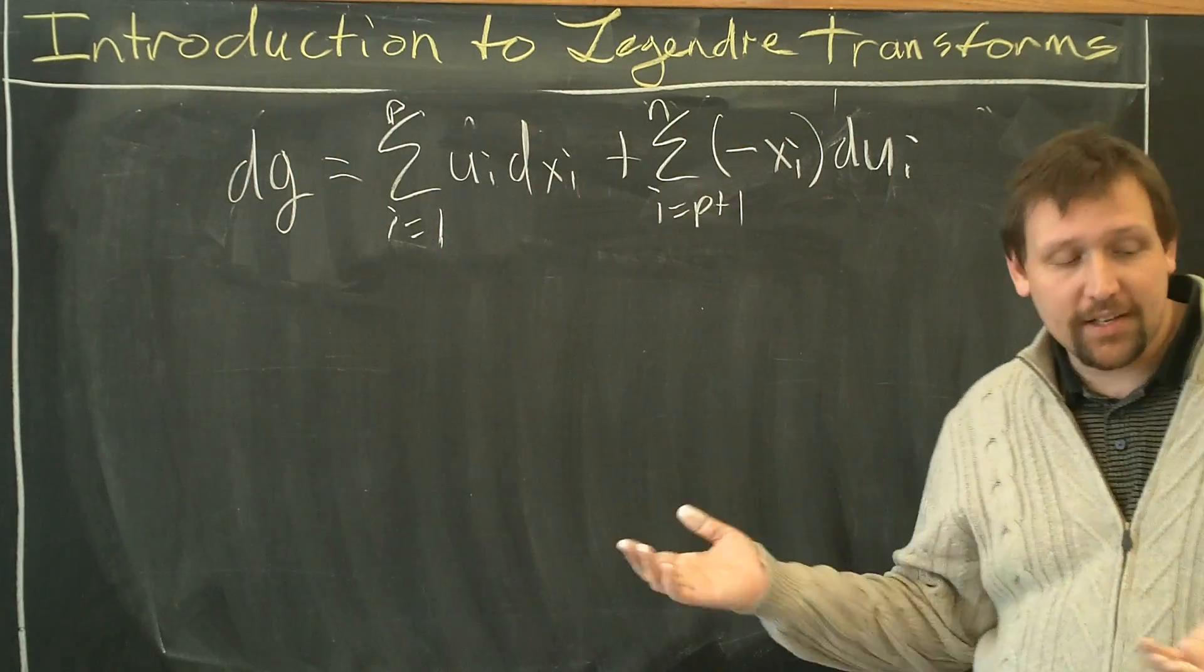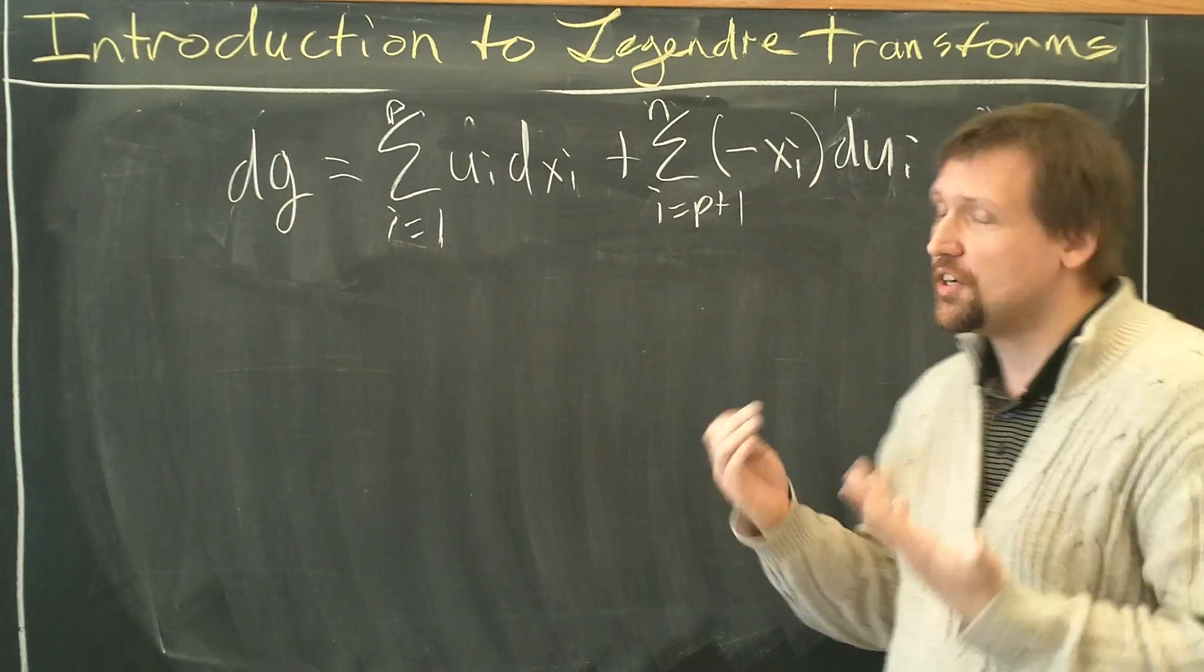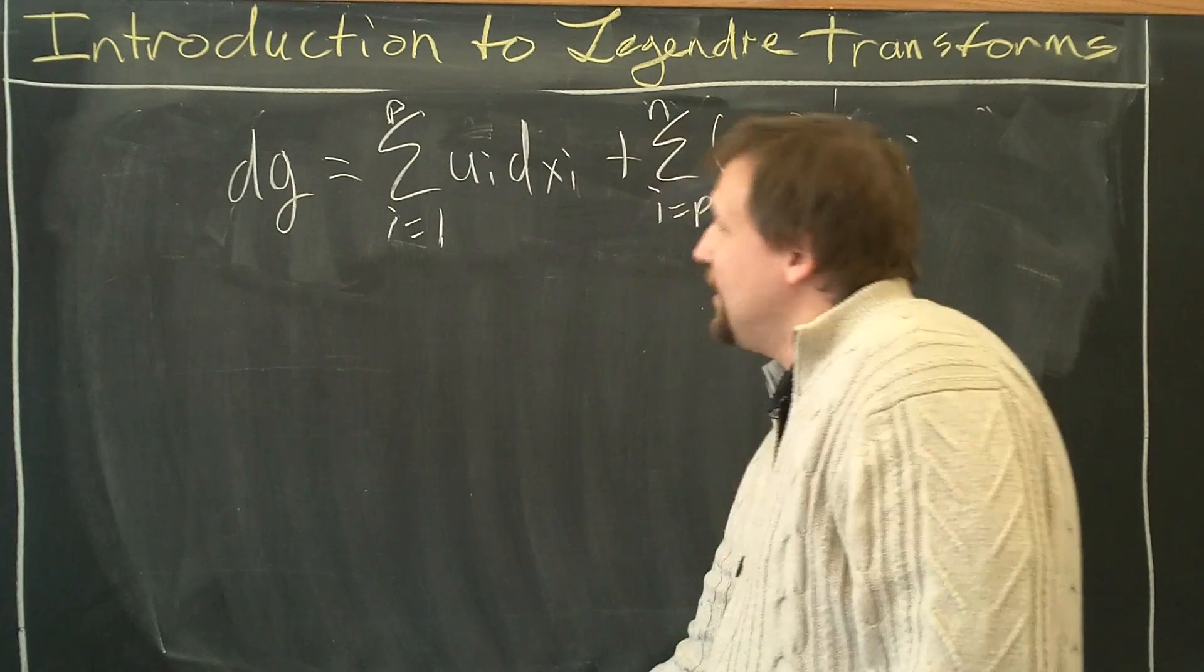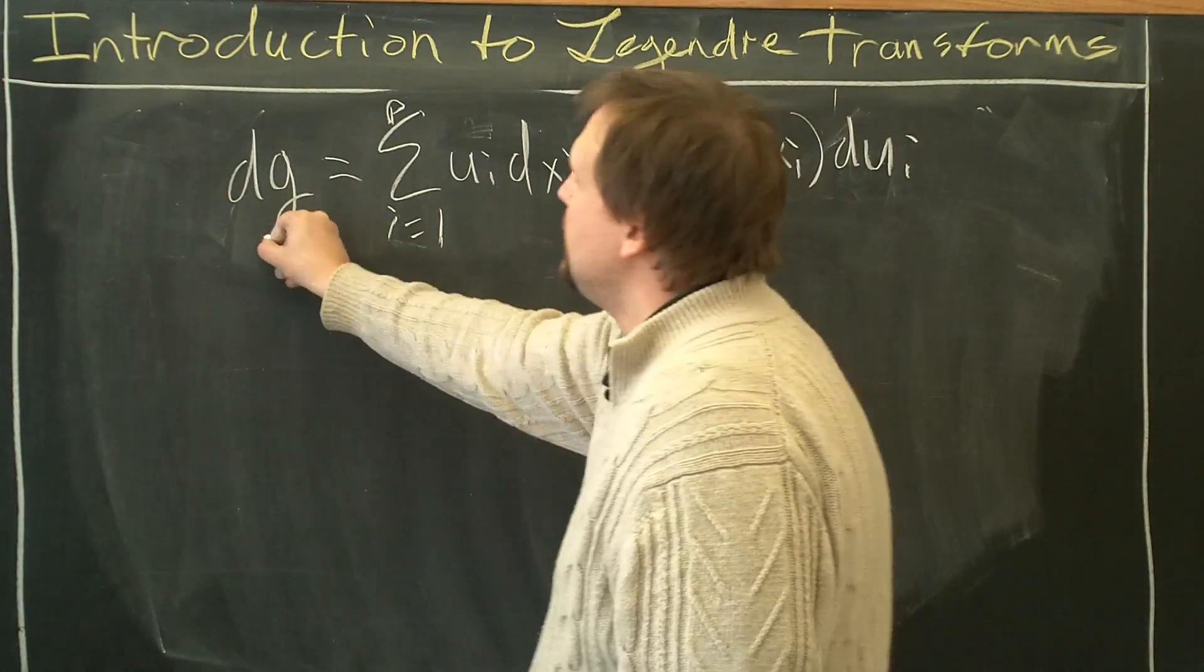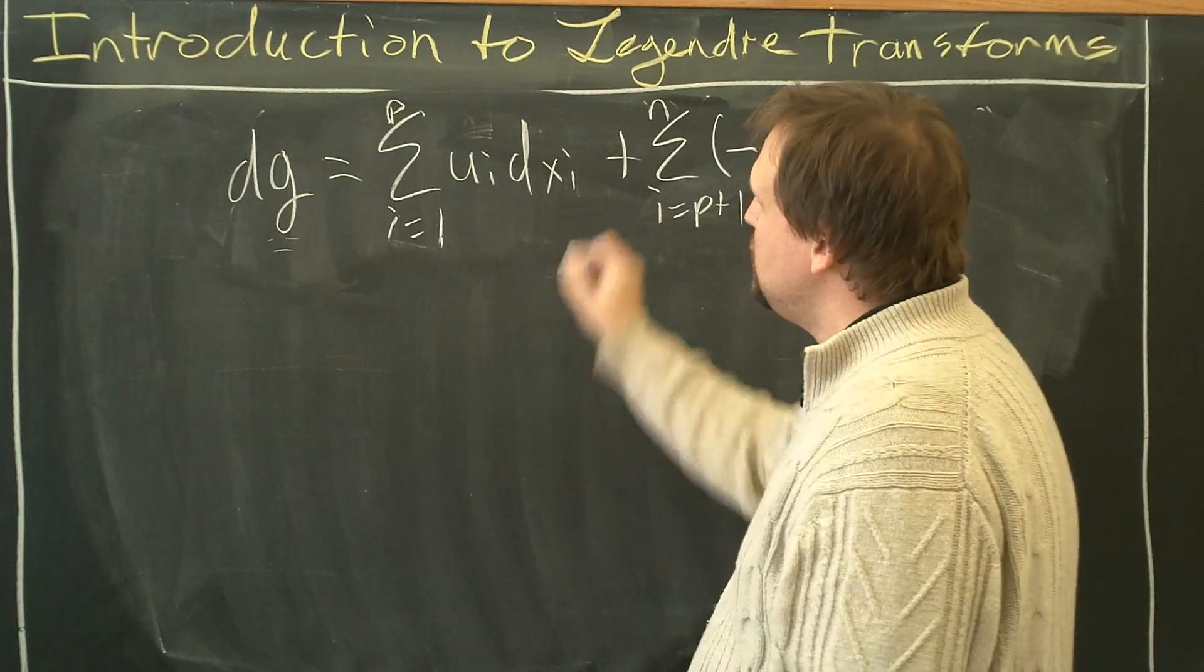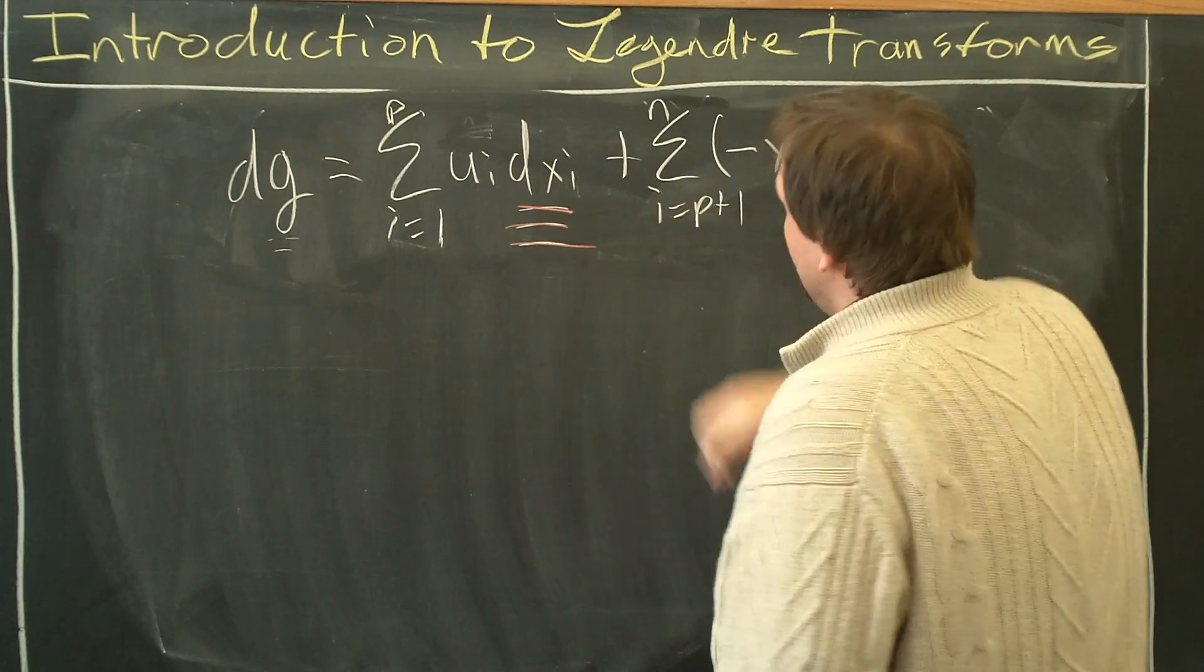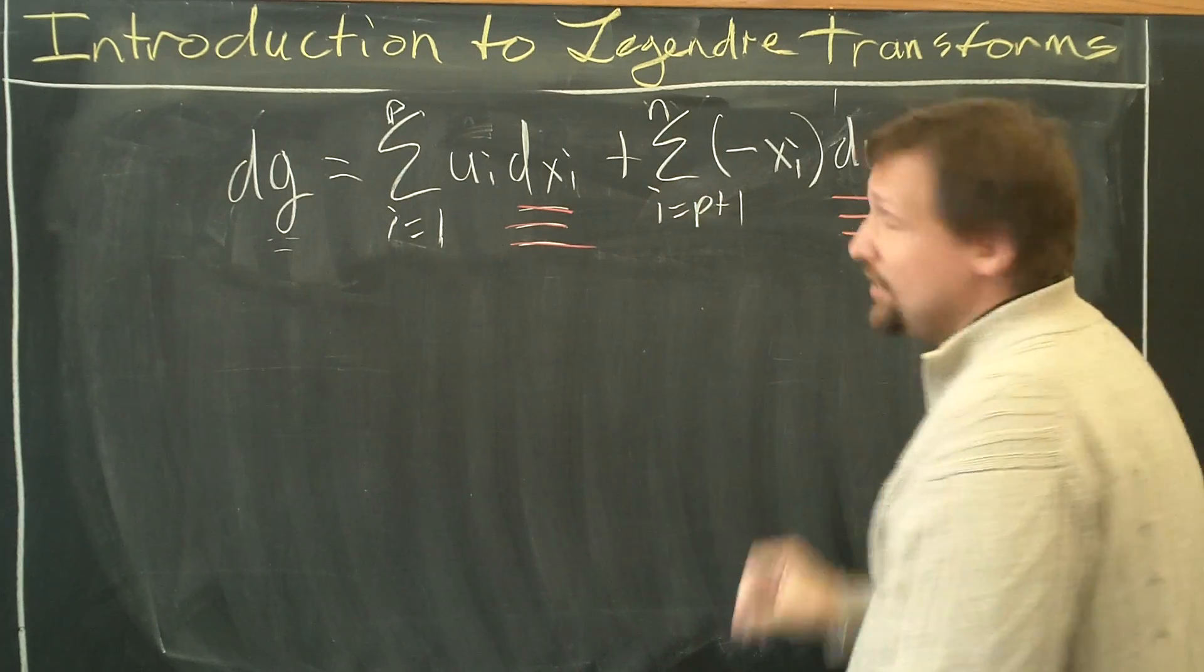So this is the new state function. What is this new function g, not state function yet, in terms of what it naturally depends on? In order to test that, notice that dg, you look for the terms that are differentials. dg depends on dxi from 1 to p here and then from the parameters p plus 1 up to n it now depends on dui.